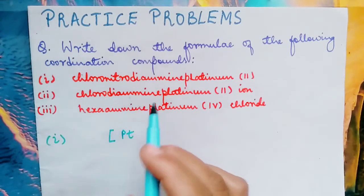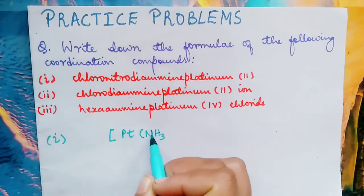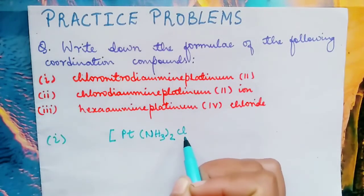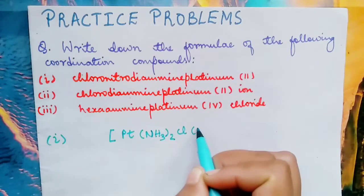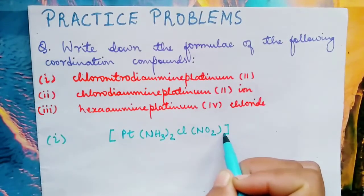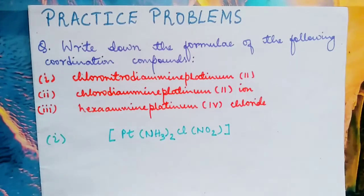We have to write first diamine because it starts with 'di'. Diamine means two. And then comes chloro because it starts with C, and then nitro. Close square bracket. That's all. It is very simple since it has no counter ion.